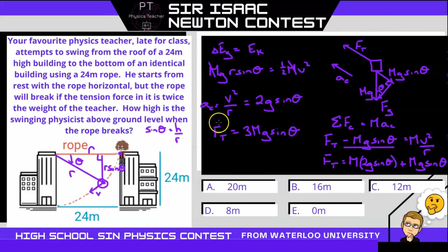Alright, so in the question I know that the rope is going to break when the tension is equal to twice the weight of the teacher. So let's set tension equal to 2mg to figure out at what point that is going to happen. So that's all going to equal 3mg sine theta. So mg is going to cancel and we're going to get sine theta is equal to two-thirds.